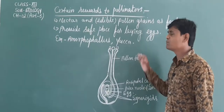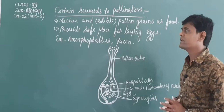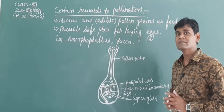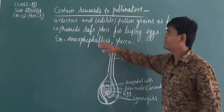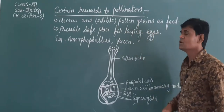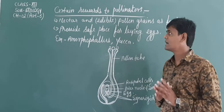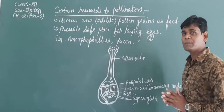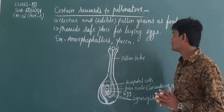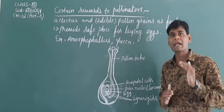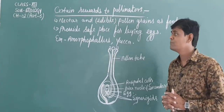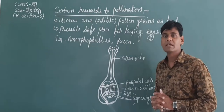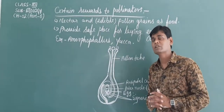Now let me see the benefits to the pollinators — certain rewards to pollinators. Pollinators get nectar and edible pollen grains as food. Flowers also provide a safe place for laying eggs. For example, Amorphophallus and Yucca are insect-pollinated plants.